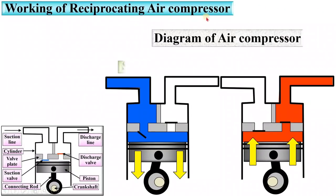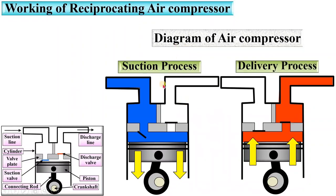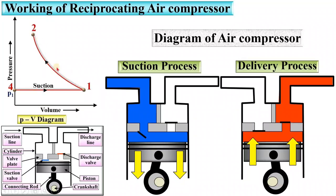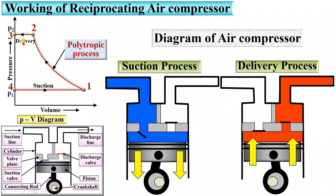Next, working of reciprocating air compressor. There are two processes: suction process and delivery process. With the help of the P-V diagram you can understand the working. Process 4-1 is the suction process, 1-2 is the compression process — which is generally a polytropic process — and 2-3 is the delivery process. The cycle is then repeated.